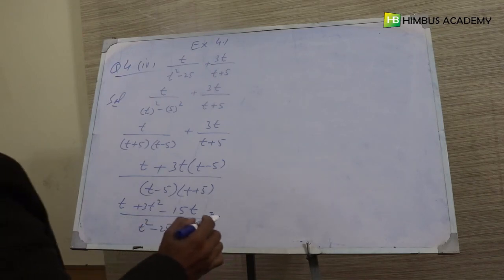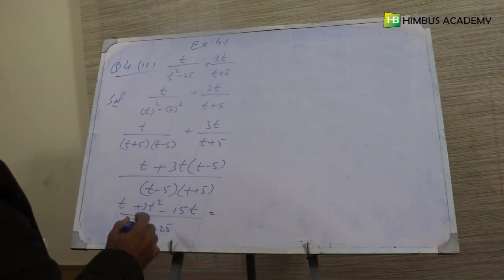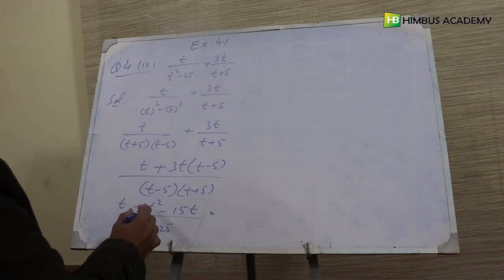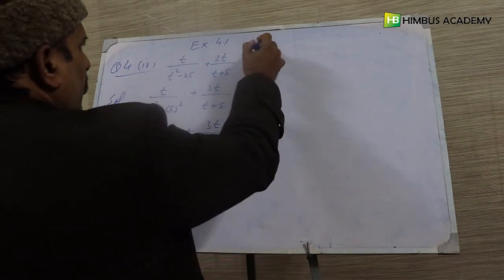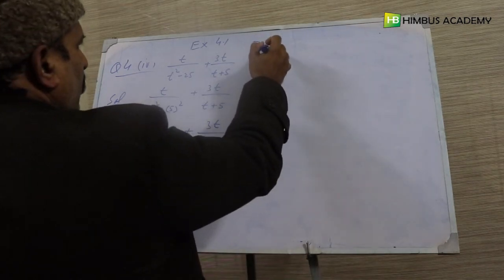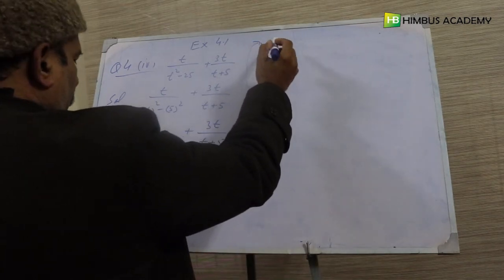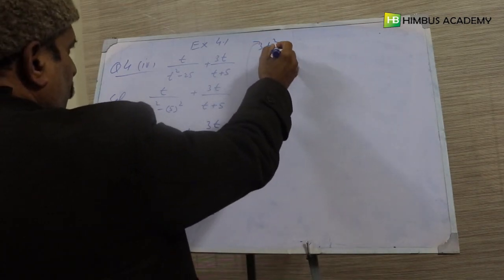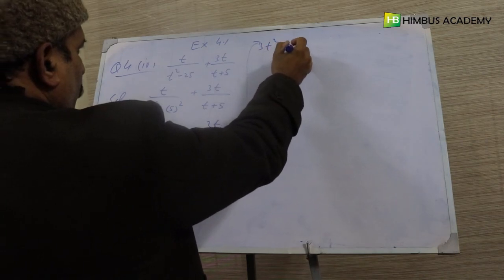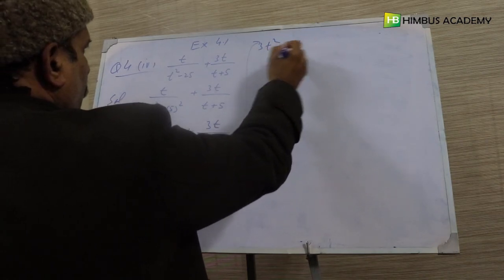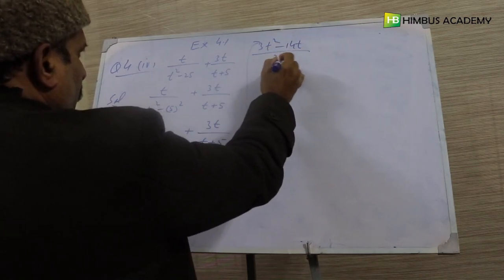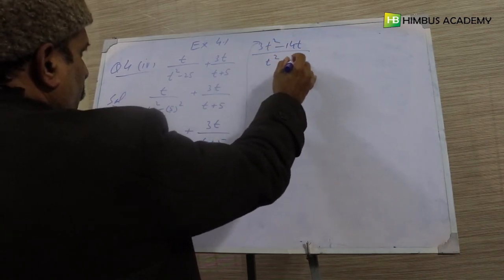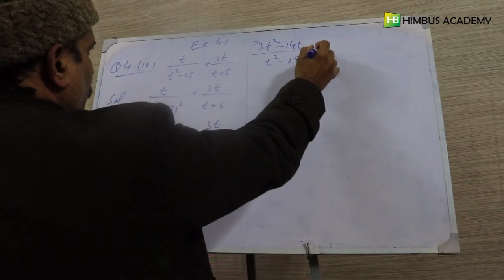Ab numerator mein t plus three t square minus fifteen t jodne ke baad: three t square minus fifteen t plus t se three t square minus fourteen t aata hai. To final answer hai three t square minus fourteen t divided by t square minus twenty five.